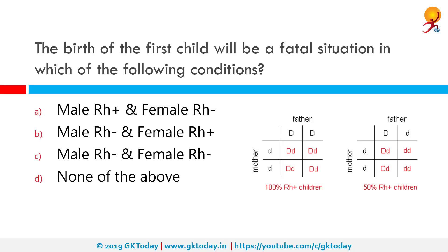The birth of the first child will be a fatal situation in which of the following conditions? The correct answer is in the case of an Rh positive male and Rh negative female. When an Rh negative woman marries an Rh positive man, Rh incompatibility results when a pregnant mother with a negative blood type is carrying a child with a positive blood type. Rh incompatibility only occurs when the mother has a negative blood type and the child has a positive blood type.